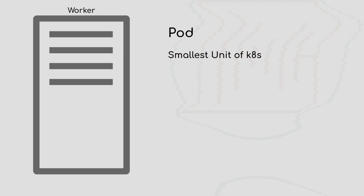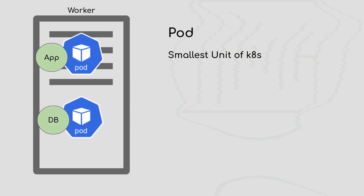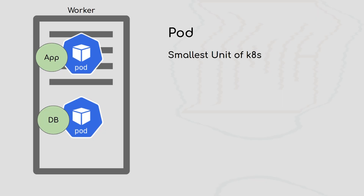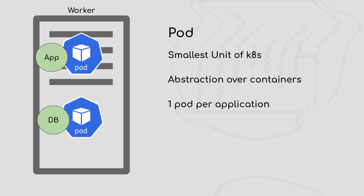The smallest unit of Kubernetes is a pod. Let's take an example of a Java application connected to a MySQL, MongoDB, or Redis database. We have two applications — a Spring Boot or normal Java application and a database — both in different containers. We can deploy both containers into individual pods: one pod for the application and one for the database, deploying both to our Kubernetes cluster.